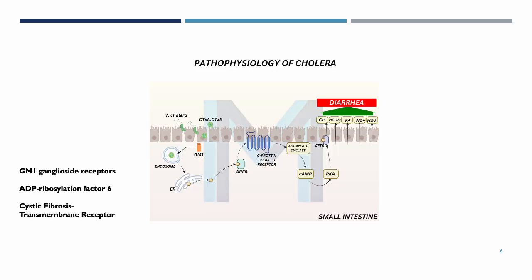Looking at the illustration in more detail: Vibrio cholera attaches to the intestinal wall and releases the cholera toxin, which is made of subunits CTXA and CTB. The CTB subunit binds to GM1 ganglioside receptors on the epithelial cells of the small intestine. The toxin is then endocytosed.